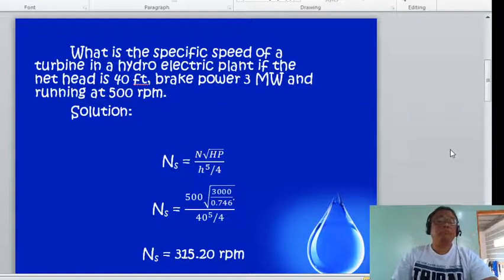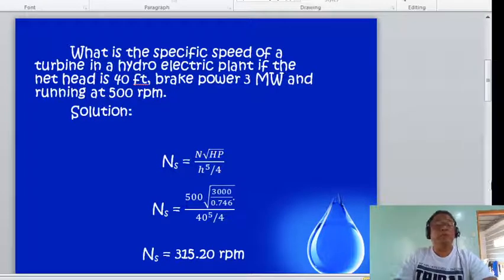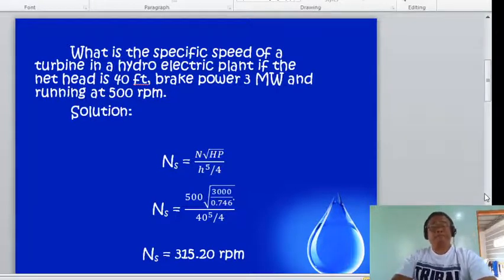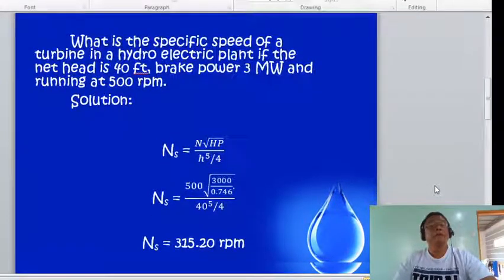The formula for the specific speed in English units is Ns equals N square root of horsepower divided by head raised to 5 over 4. Substituting the values, Ns equals 500 multiplied by the square root of 3000 divided 0.746 to make it horsepower, then divided by 40 raised to 5 over 4. So the specific speed is 325.20 rpm. It's very easy.